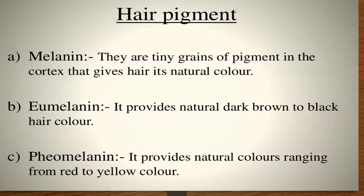There are different hair pigments. Melanin consists of tiny grains of pigment in the cortex that give hair its natural color. Eumelanin provides natural dark brown to black colors, while pheomelanin provides natural colors ranging from red to yellow. Different pigment combinations — eumelanin and pheomelanin — are responsible for the various natural hair colors people have.